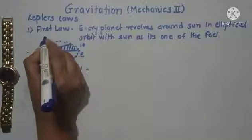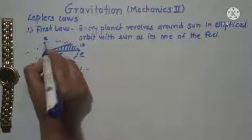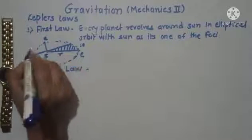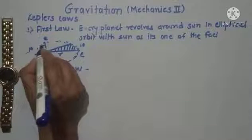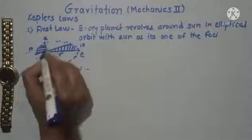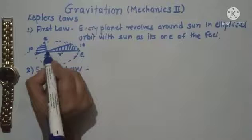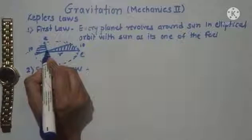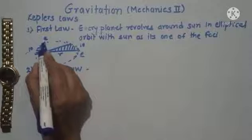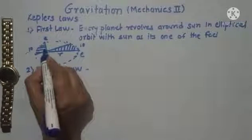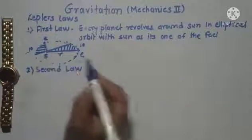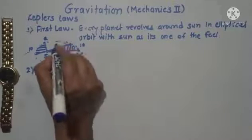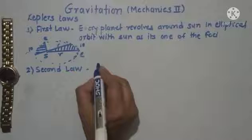When the Earth moves from one position to another in the same time interval of 10 seconds or 10 minutes, you can see that the distances are different, so it might seem that the area should be greater or smaller. But the area swept by the radius vector is equal in both cases.